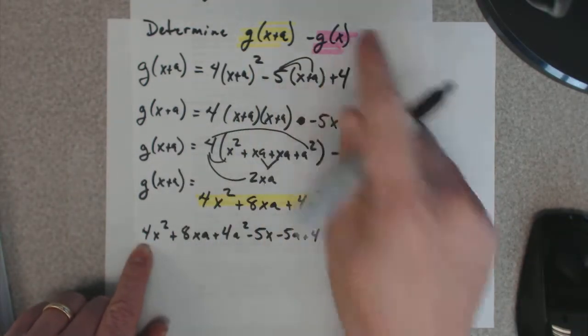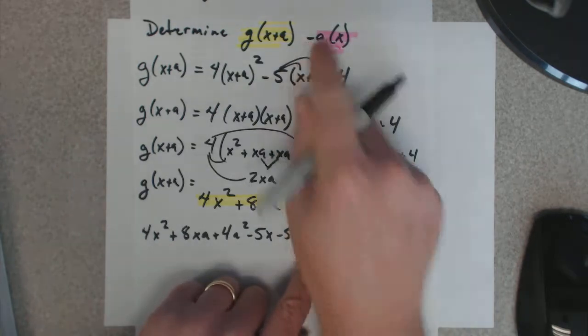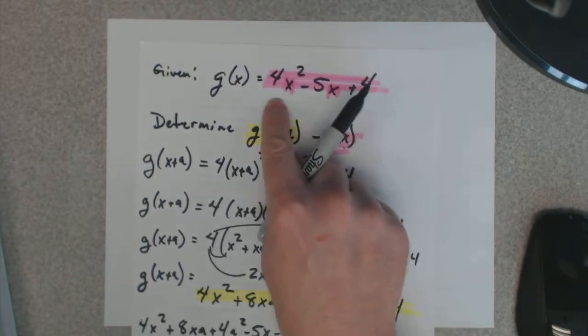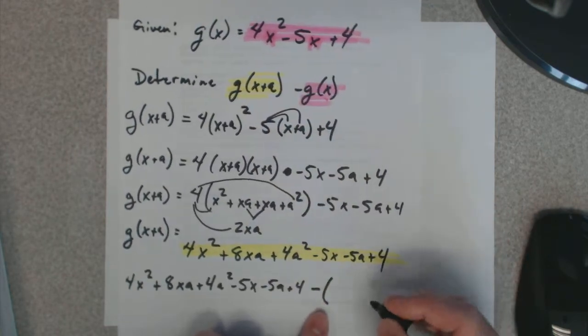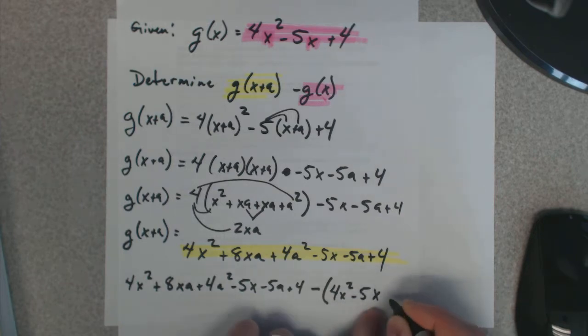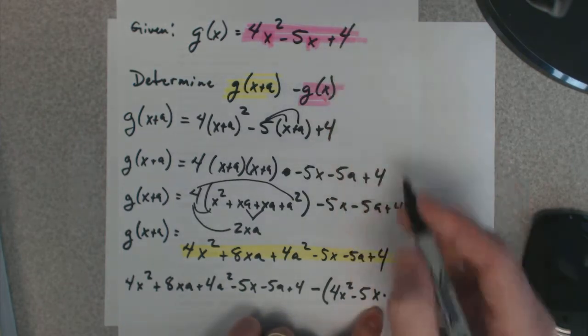Now, we write this part minus. It's a minus there. Minus all of g of x, which is in red here. 4x squared minus 5x plus 4.